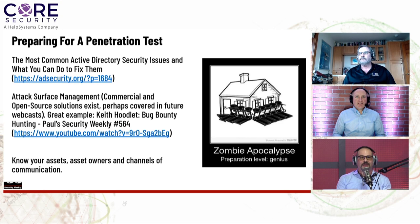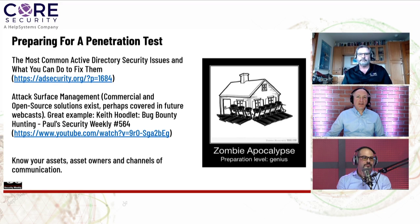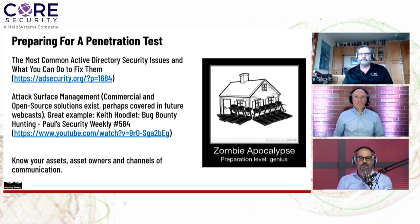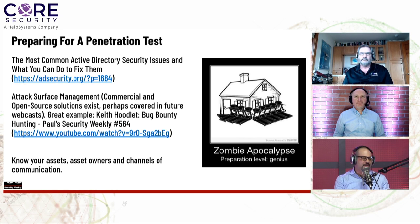The tools and techniques attackers use to discover what domains and websites you have exposed are really not all that hard to implement. Things like Shodan, an Nmap scan, a Nessus scan — there are lots of ways to identify aspects of this, and they're pretty readily available. You can scan your entire network address range for ports 80 and 443, find all your public-facing websites, and take screenshots. Keith Hulett covered some of these tools in his bug bounty segment on Paul's Security Weekly number 564.